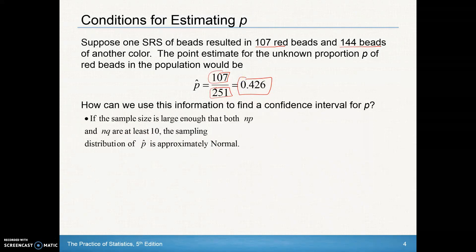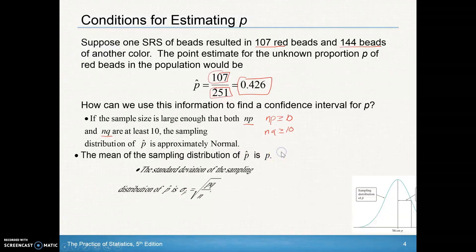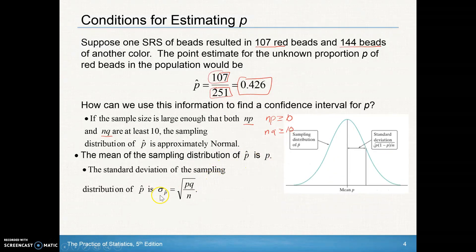How can we use this information to find a confidence interval for p? Well, if the sample size is large enough that both n times p and n times q are at least 10, the sampling distribution of p hat is approximately normal. We know the mean of the sampling distribution of p hat should be p if we do many samples. And our standard deviation is that square root of pq over n.